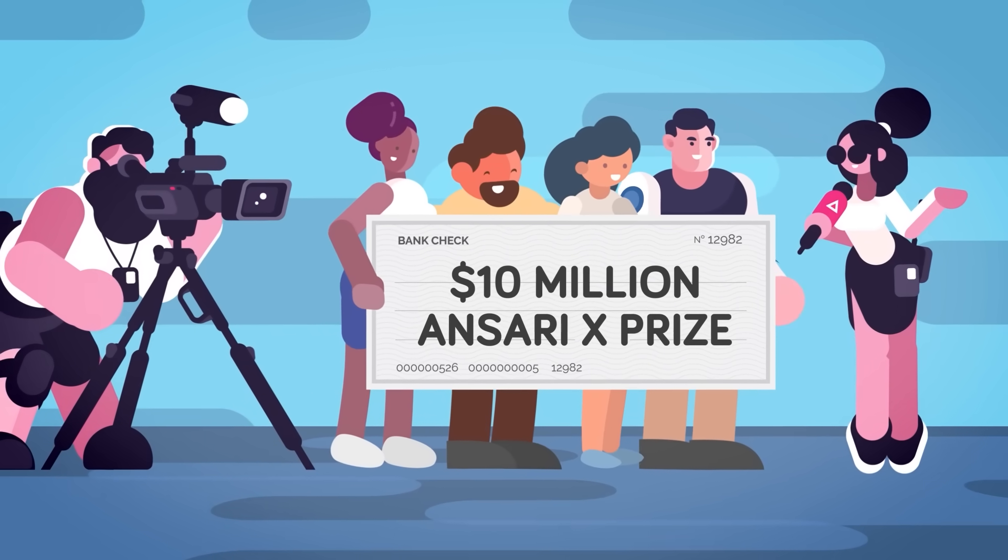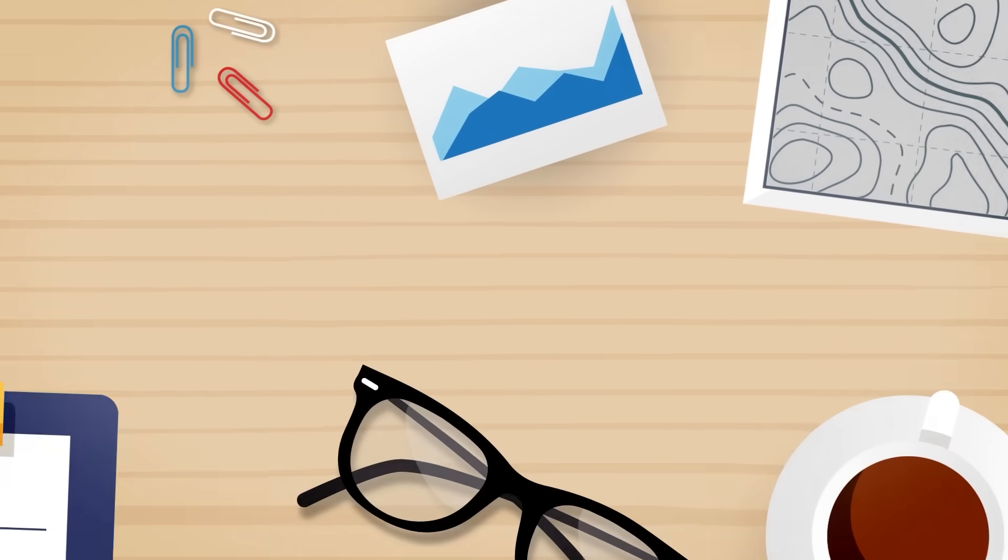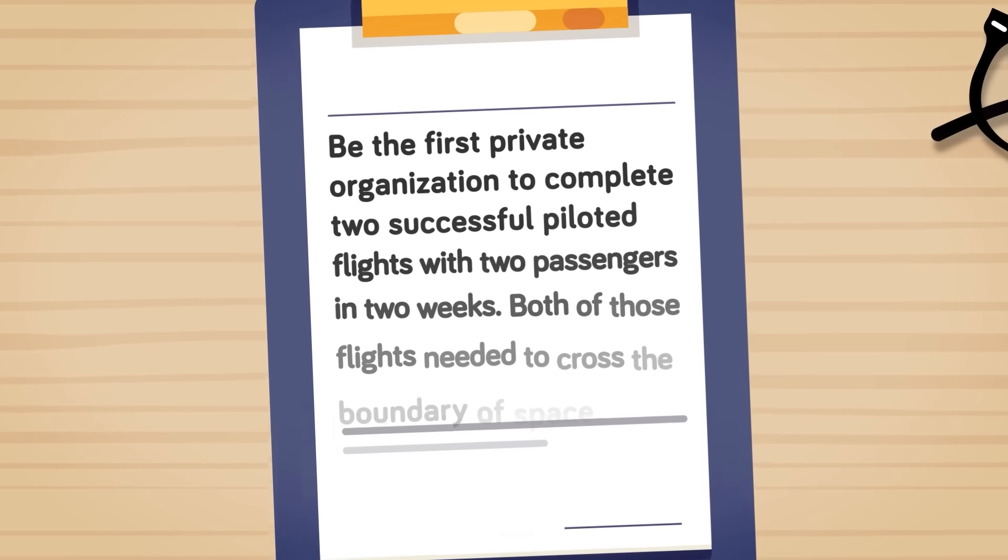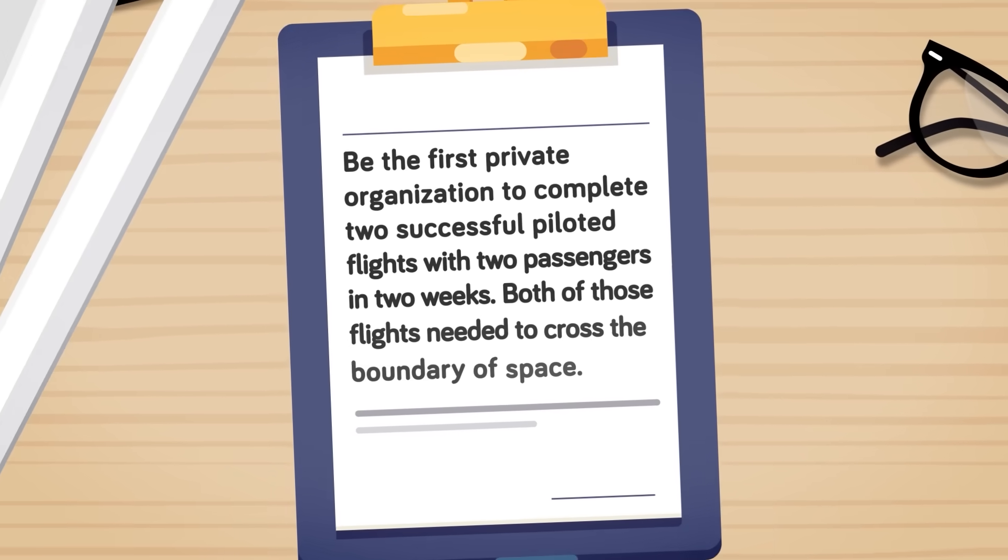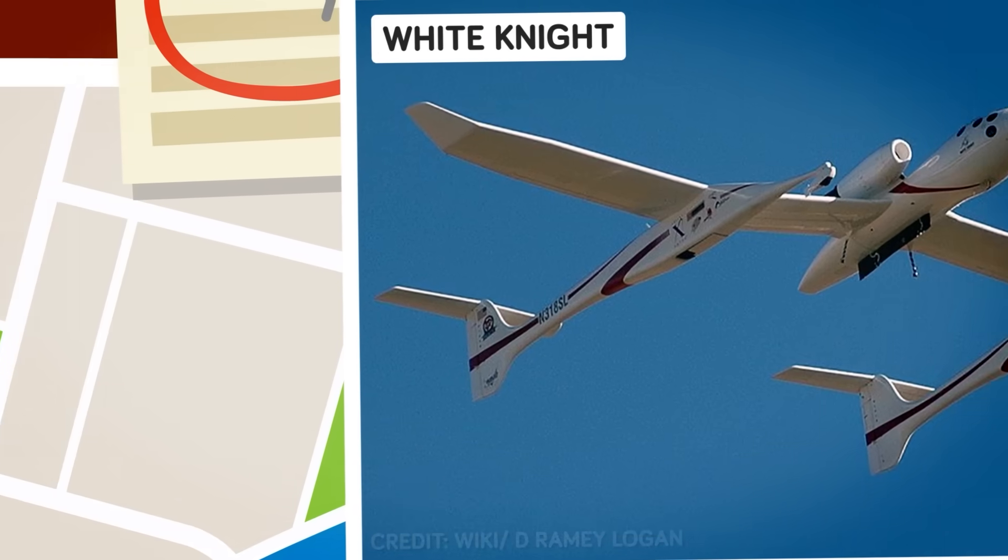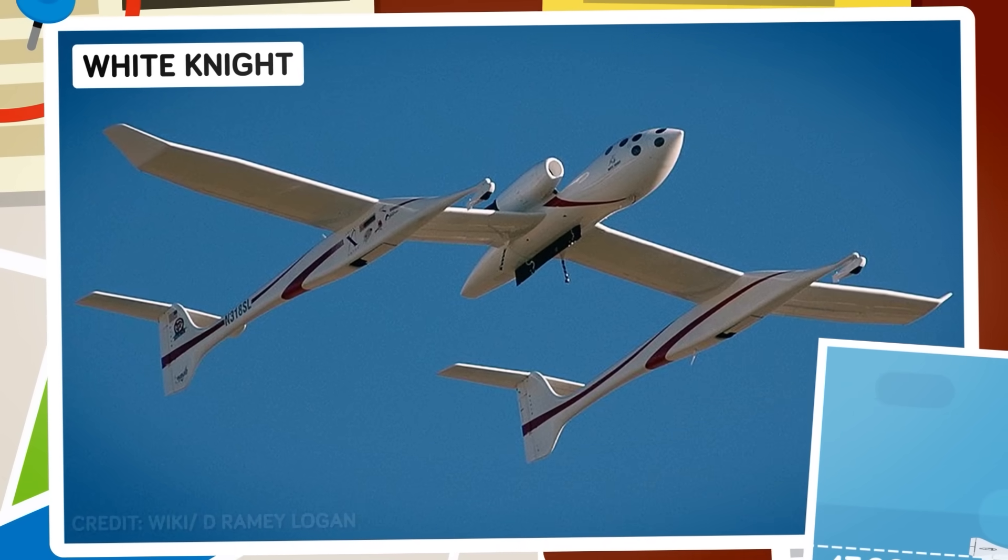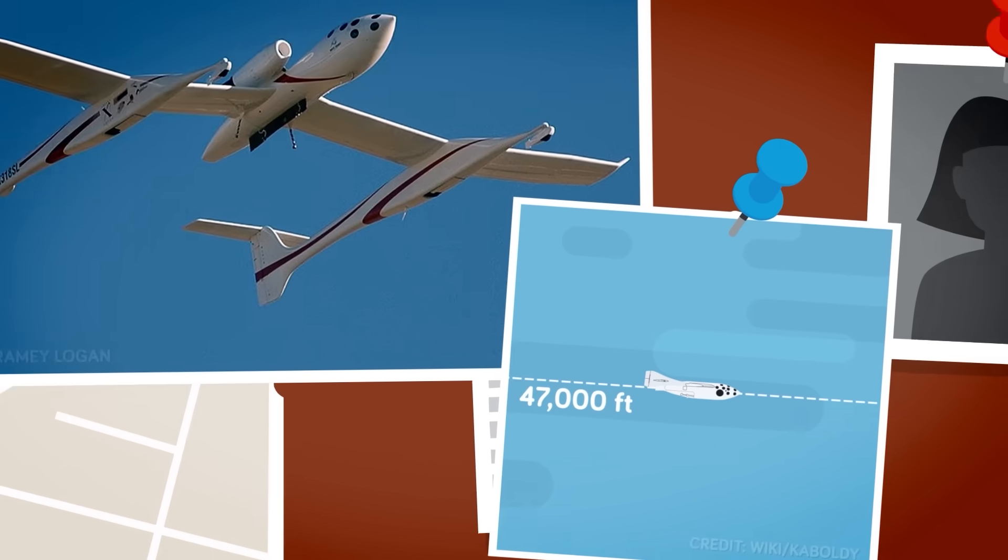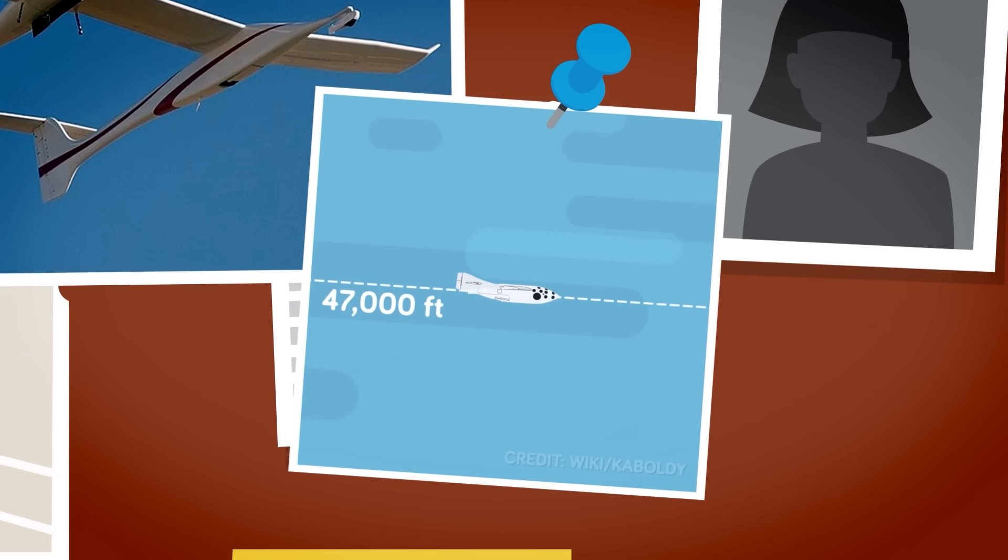The challenge was as simple to describe as it is difficult to achieve: be the first private organization to complete two successful piloted flights with two passengers in two weeks. Oh, and both those flights need to cross the boundary of space. This was achieved through several innovations working together. First, there was the launch aircraft, a hybrid rocket engine system named White Knight. This carried Spaceship One to a height of 47,000 feet and then dropped it. At this point, the pilot lit the craft's hybrid rocket, sending SS-1 shooting up toward its goal.